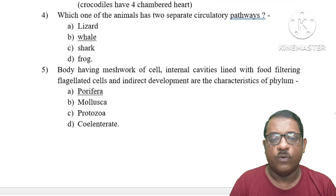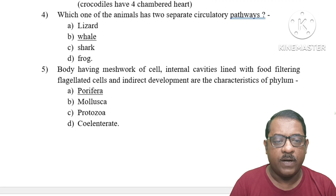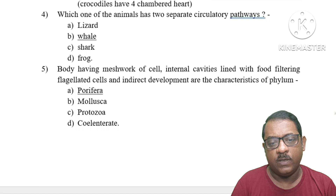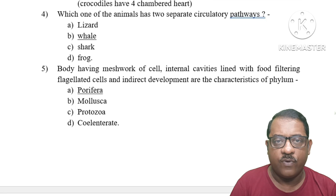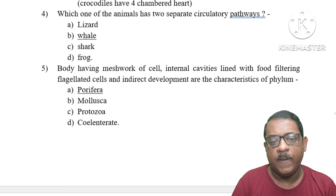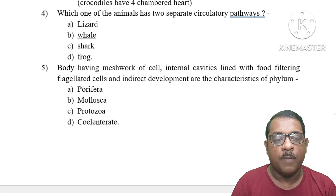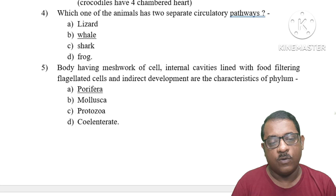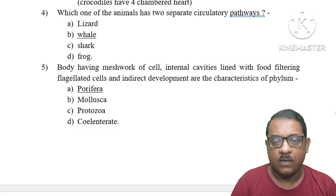Question 4: Which one of these animals has two separate circulatory pathways? Lizard, shark and frog do not have a complete double circuit. Mammals have a double circuit heart, making mammals the right answer.